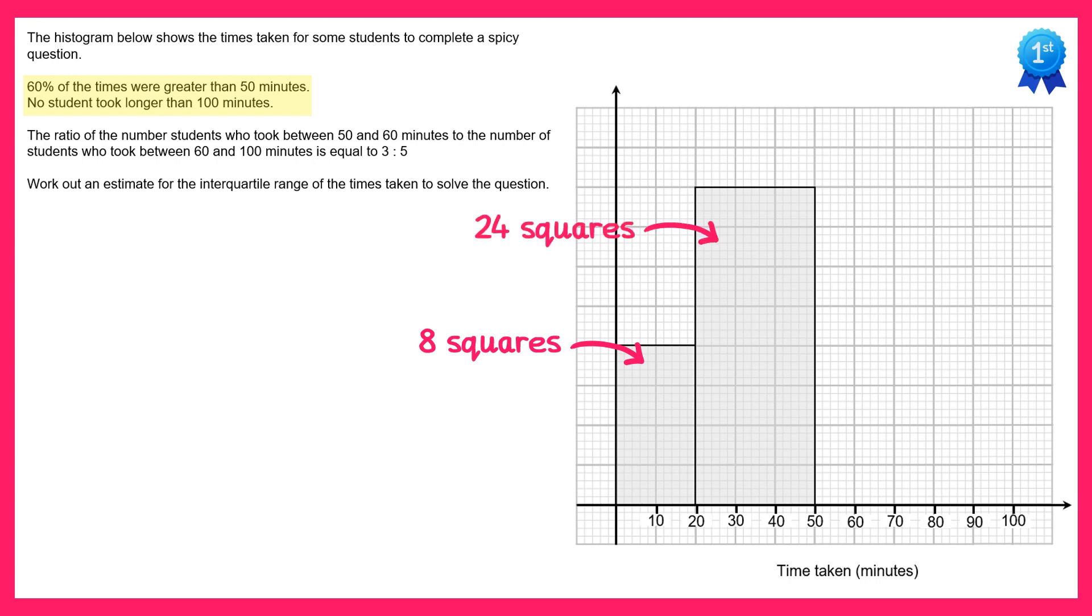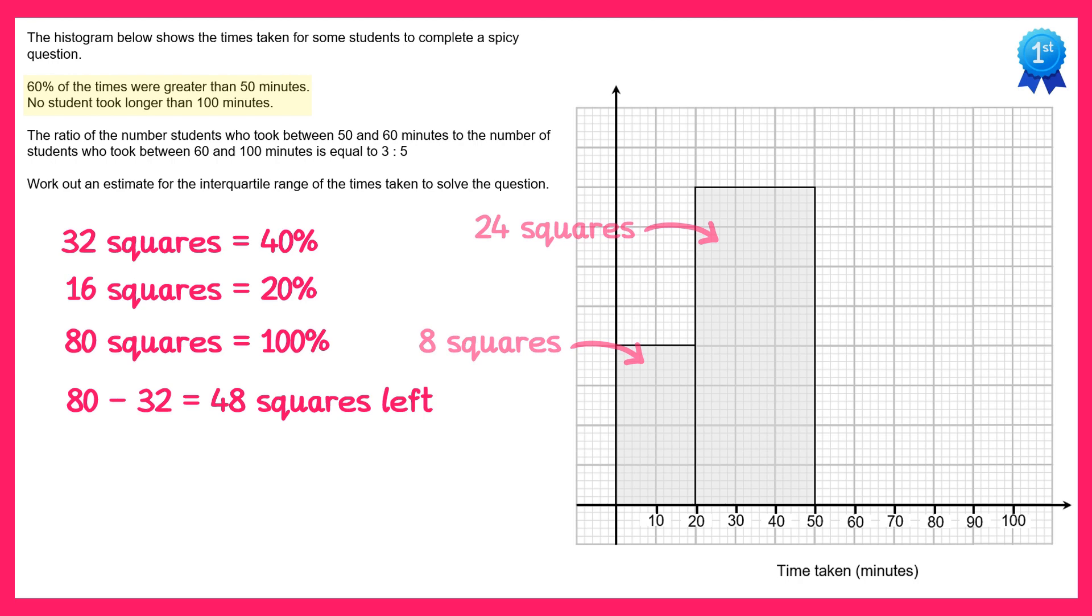We said earlier that 40% of the times were lower than 50 minutes. So we have 32 squares here in total since 24 plus 8 is 32, so 32 squares represents 40% of the data. If you half this then 16 squares is the same as 20% of the data, and then times this by 5, 80 squares will represent 100% of the data. So the whole of the histogram must have 80 squares in total. We've already got 32 of those squares so 80 take away 32 leaves you with 48 squares left.